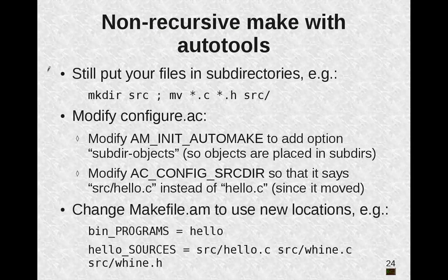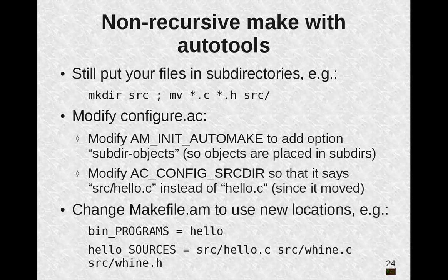Now with a non-recursive make, you still put your files in subdirectories, but when you modify your configure.ac, you should modify AM_INIT_AUTOMAKE to add an option called subdir-objects. That way objects are placed in their subdirectories along with the source files, which is important in case you have the same source file name in different directories. You also need to modify AC_CONFIG_SRCDIR because we're going to move the source file that we're using as the safety check.